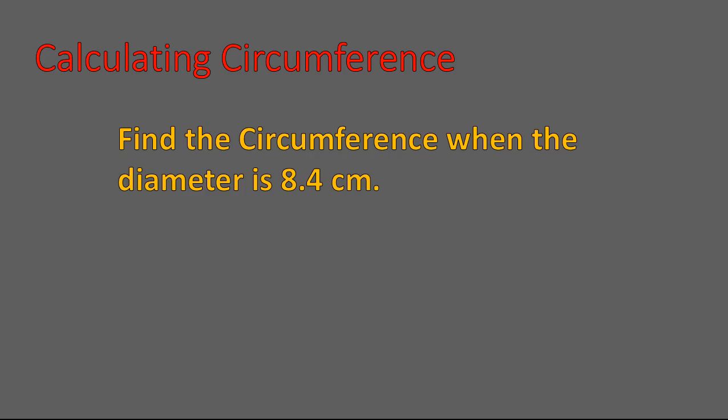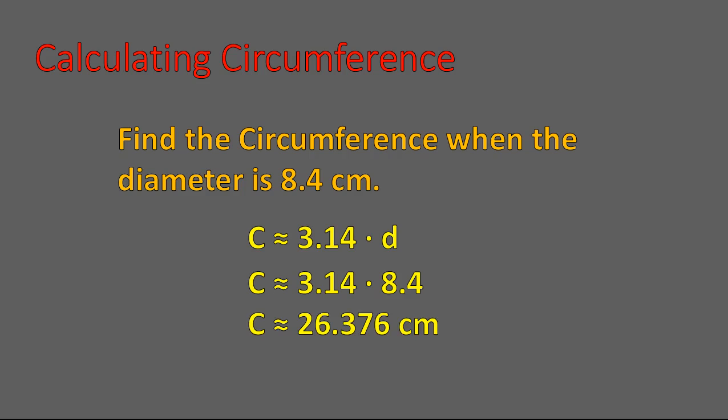Here's your question: find the circumference when the diameter is 8.4. Go ahead and pause the recording and try that one out. Are you back? Good. You didn't pause, did you? I know, I can tell. Let's go ahead and solve this one: 3.14 times our diameter — 3.14 times 8.4. You should get 26.376 centimeters as your circumference. That's the circumference when the diameter is equal to 8.4 centimeters. And that is calculating circumference.